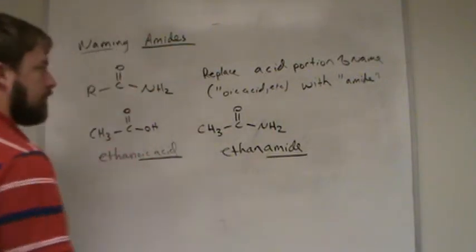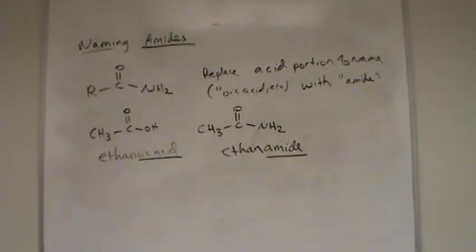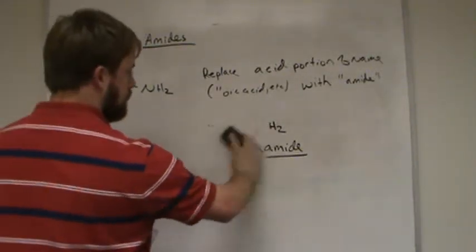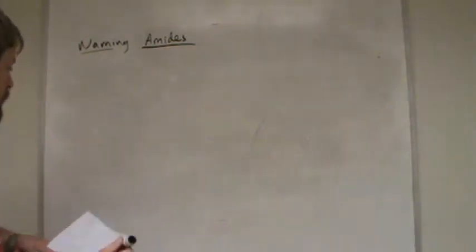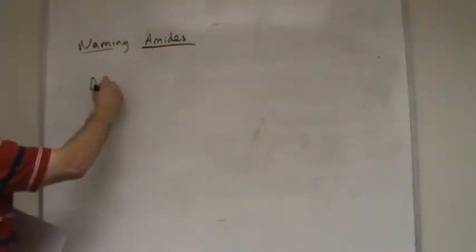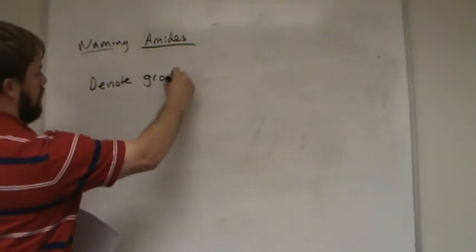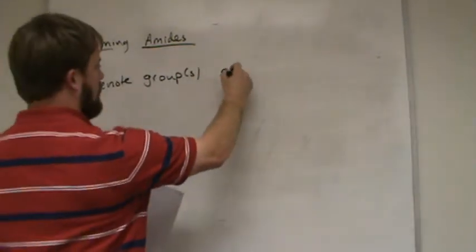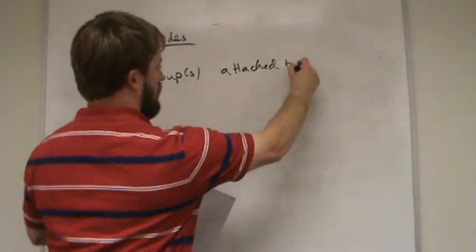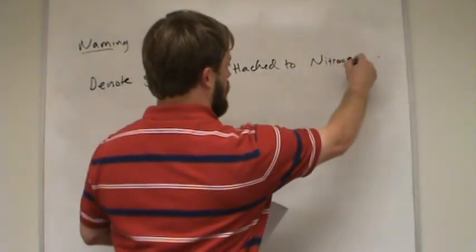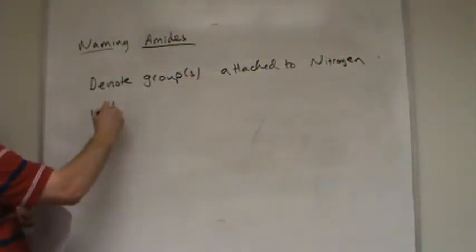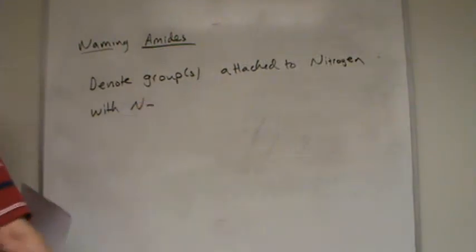Now, we have to get a little bit more complicated when our nitrogen has something other than hydrogen bonded to it. So we denote the group or groups attached to nitrogen with a big N, italicized N. So here's an example.